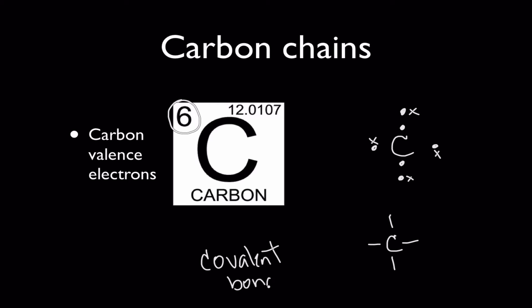So carbon atoms in chemistry seek to form four covalent bonds and you can represent these covalent bonds with little lines like this.